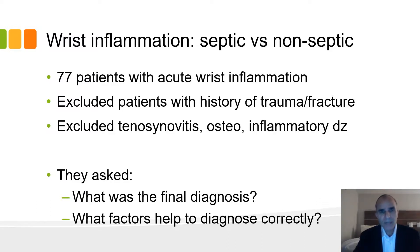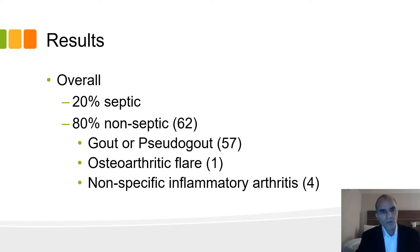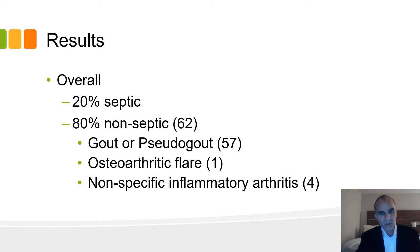They had 77 patients with wrist inflammation, none of whom had a history of trauma, and none of whom had an obvious diagnosis such as infected tenosynovitis, osteomyelitis, or a known inflammatory condition — just like our patient. They presented with acute inflammation of a joint. They looked at these patients, knowing the final diagnosis, to identify factors associated with a specific outcome. Overall, only 20% had an infection. If you simply said none of these are septic, you'd be right 80% of the time. But you can't be wrong 20% of the time because a wrist with infection ends up with destroyed cartilage. Most non-septic cases were either gout or pseudogout, so basically we're talking about gout, pseudogout, or infection.